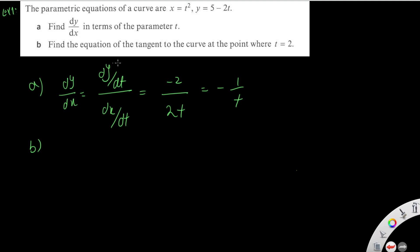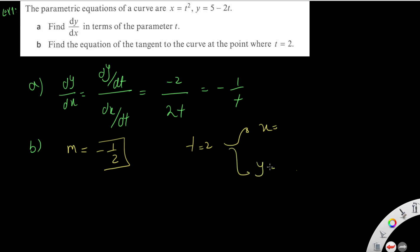Part b — find the equation of the tangent to the curve at the point where t equals two. First, we find the gradient m by substituting t equals two: m equals negative one over two. Then we find the coordinates: x equals two squared equals four, and y equals five minus two times two equals one.